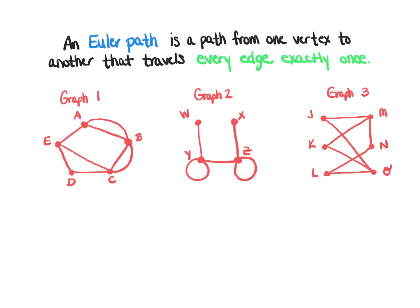When we talk about Euler paths and Euler circuits, this is a specific or special kind of path or circuit. An Euler path is a path from one vertex to another except an Euler path travels every edge exactly once. Once we've traveled an edge, we are not allowed to travel it again.